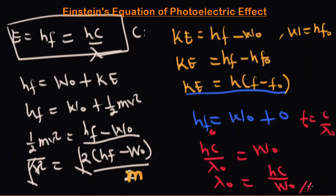This is the equation we can use to obtain the minimum wavelength. This is the minimum frequency, or the threshold frequency, that the wave must possess for emission to occur. Below this frequency, there wouldn't be any emission of electrons. That's it for this video. In the next video, we will look at how to solve problems using some of these equations. Thank you.